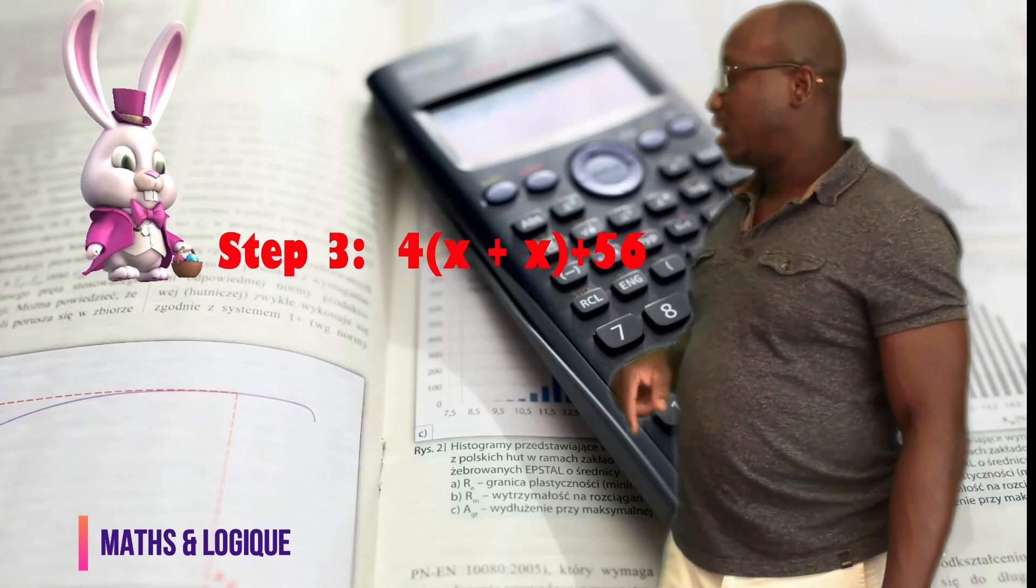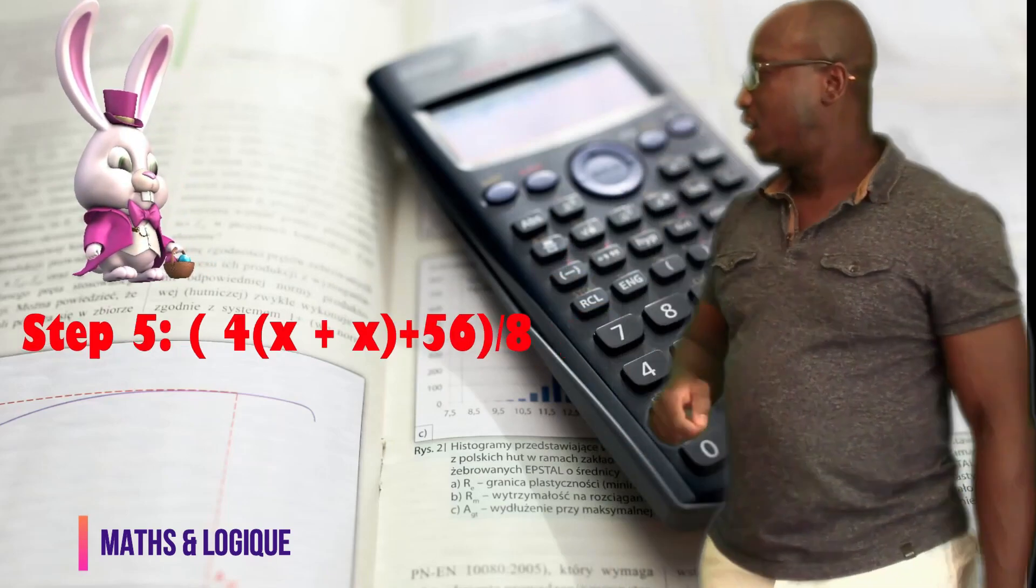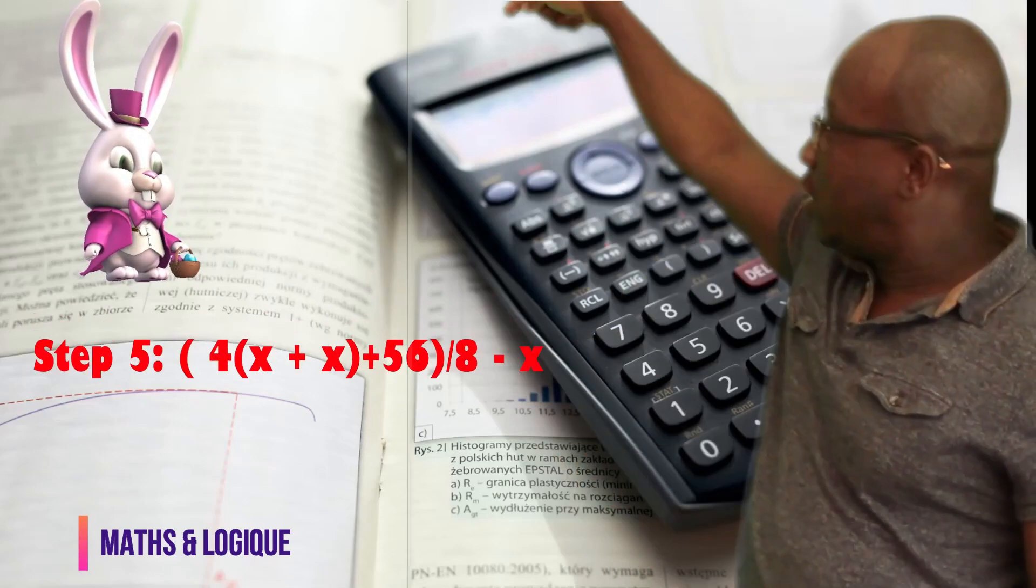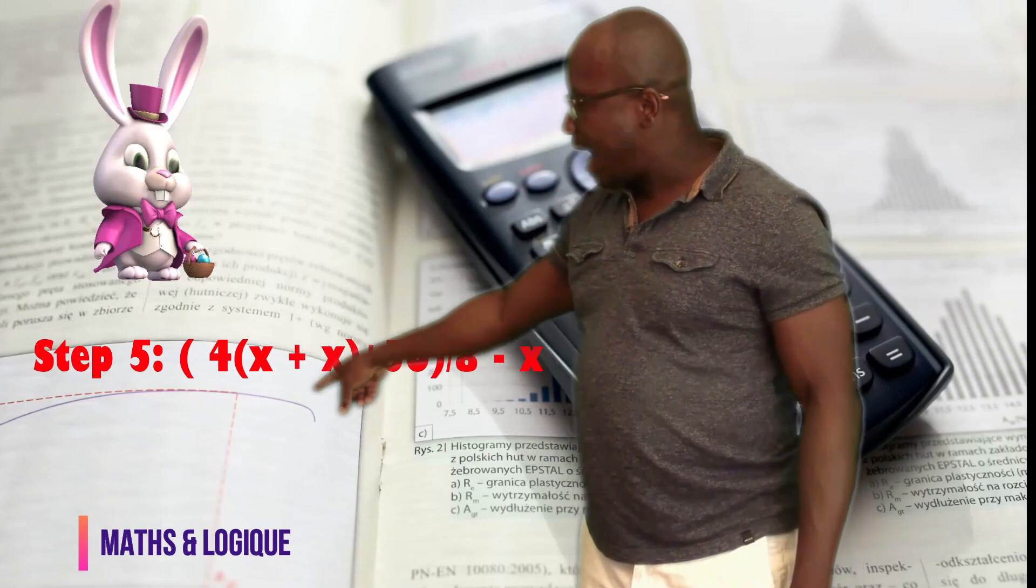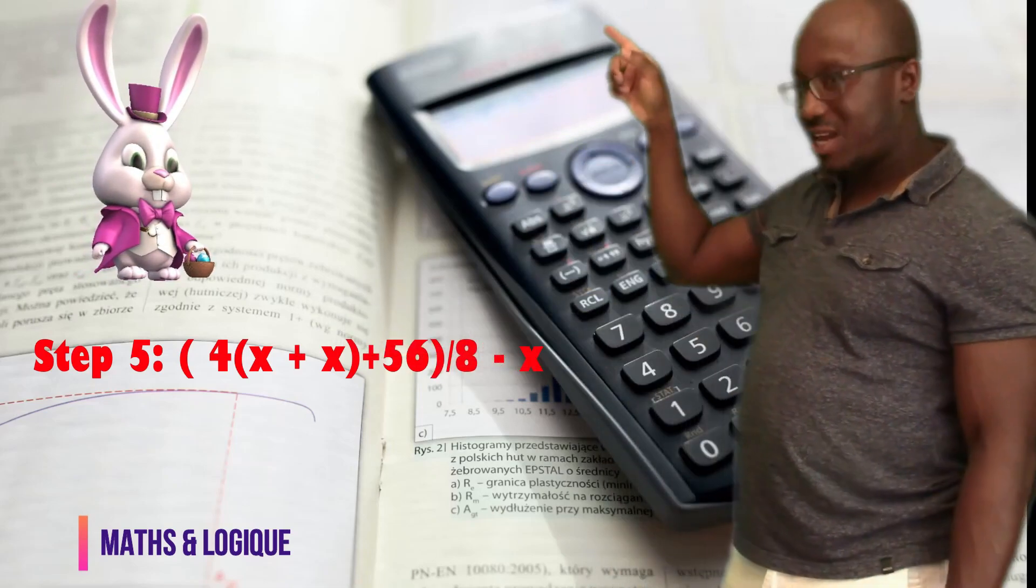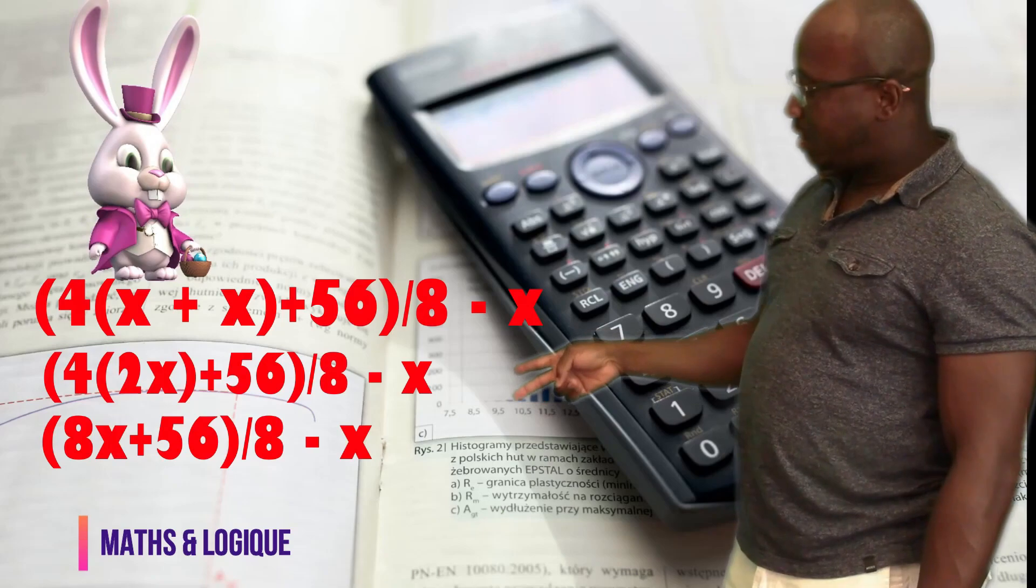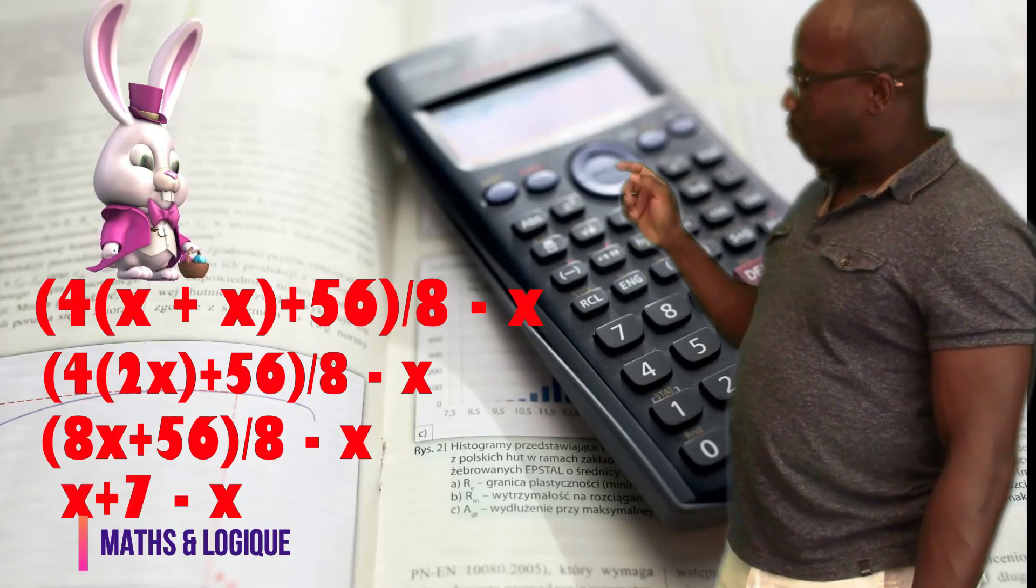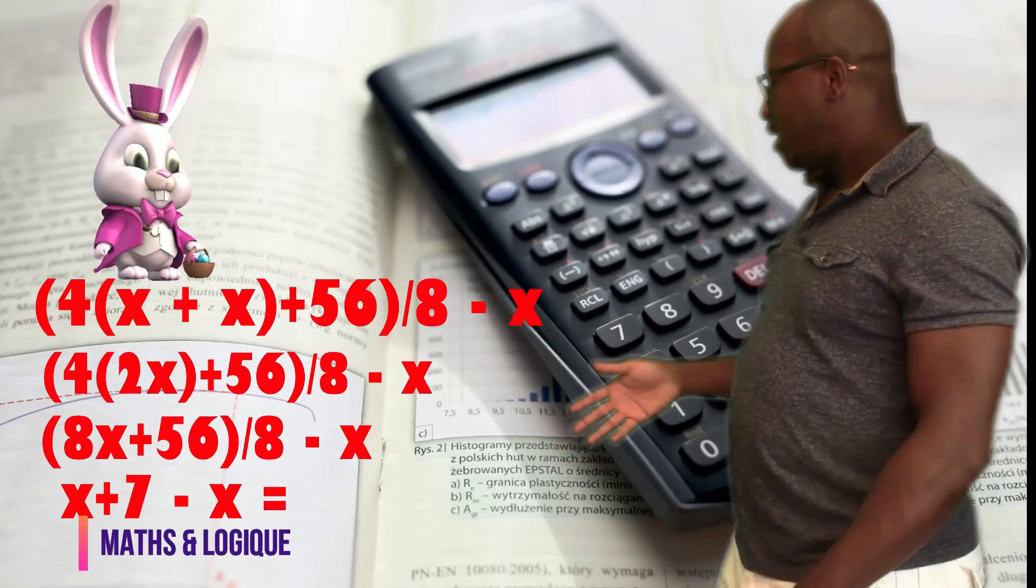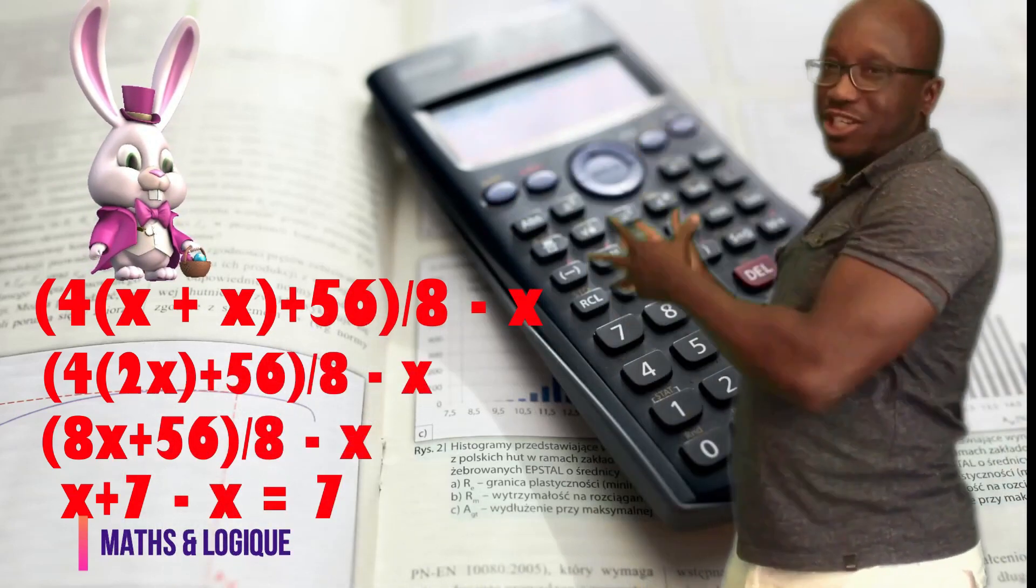In step number 4, you told him to take the result in step number 3 and divide it by 8. In step number 5, you told him to take the result in step number 4 and subtract the original number from this algebraic expression found in step number 4. So, we have the algebraic expression in step number 4 minus x. And, as you can see, when I simplify that expression, I will get to the point I will have x plus 7 minus x. That gives me x minus x is 0. Then, what I have left over here is 7. So, this is the explanation of the math trick.